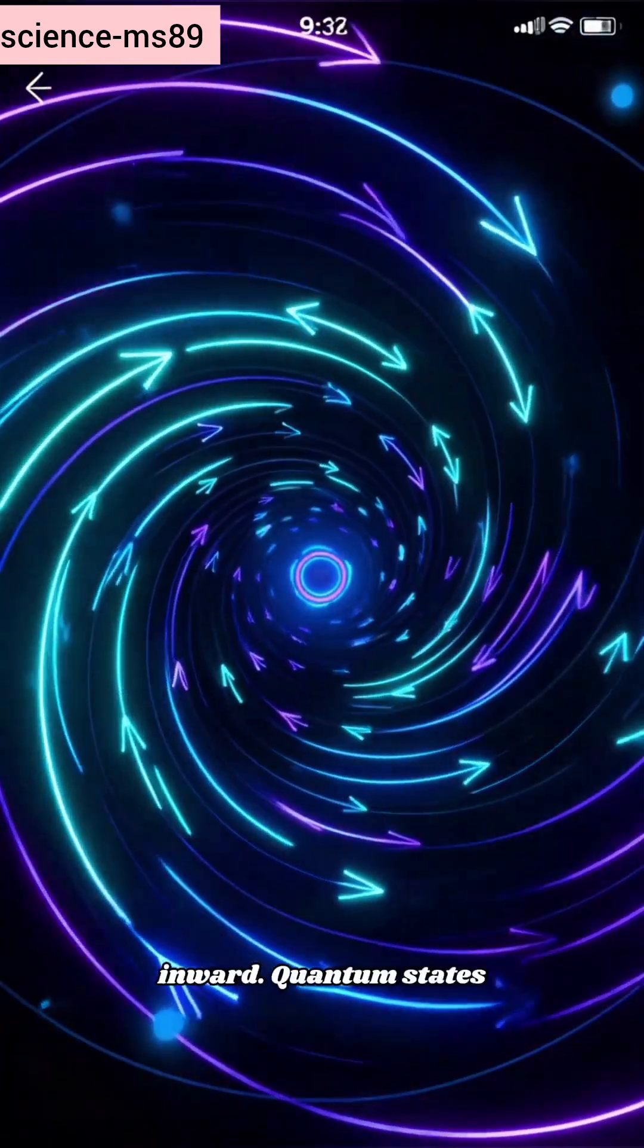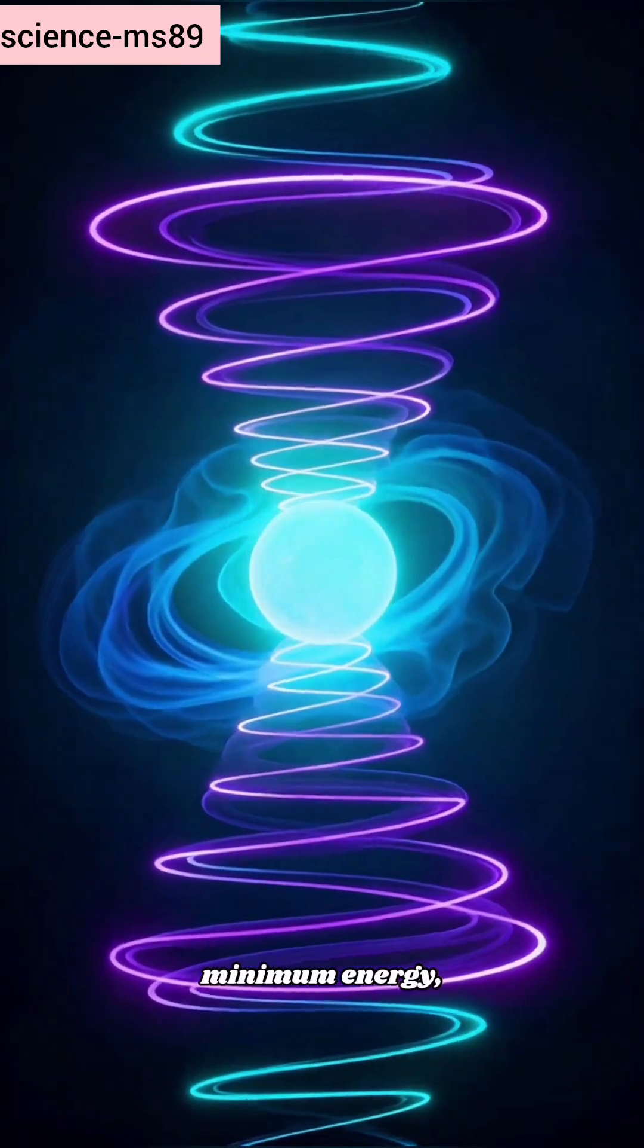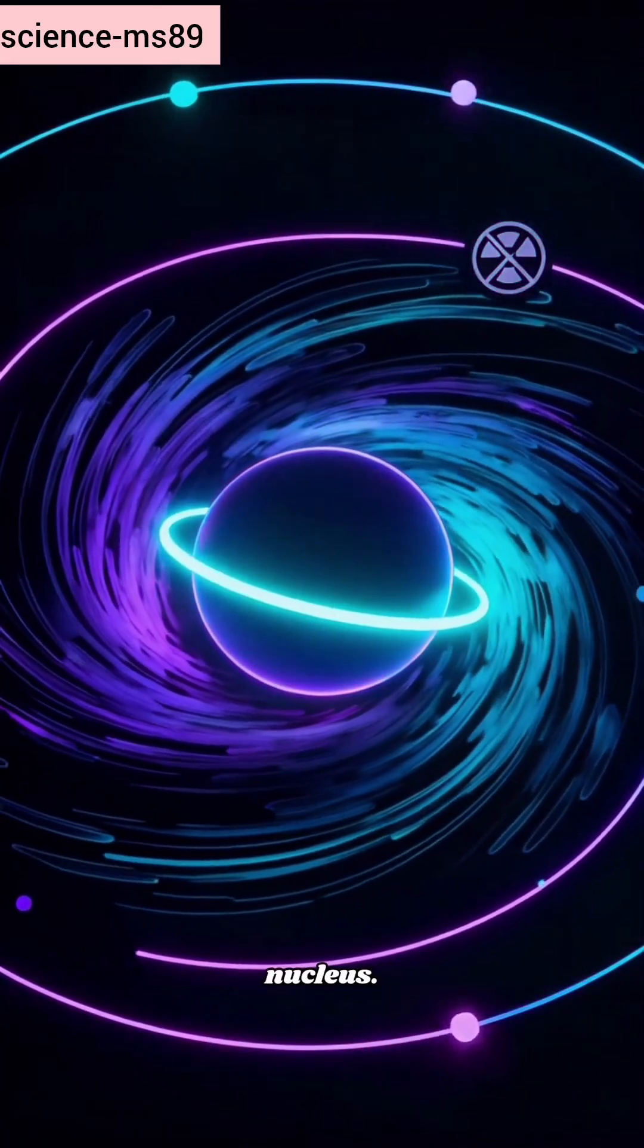Electrons don't spiral inward. Quantum states are stable standing waves with minimum energy preventing collapse into the nucleus.